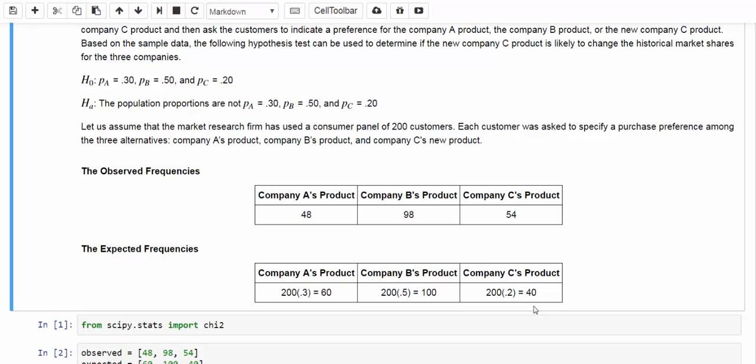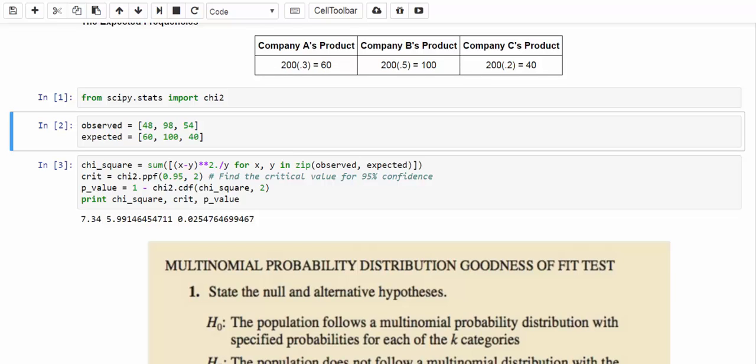And next, let's do our calculation in IPython notebook. The calculation is pretty straightforward. The observed frequencies are 48, 98, and 54, and the expected frequencies are 60, 100, and 40. And then, we can use list comprehension to calculate chi-square test statistic. Assuming that confidence level is 95%, or level of significance is 5%, we can find out about the critical chi-square value. And in the end, because this is the upper tail test, we can calculate the p-value in such a way. And let's take a look at the final result.